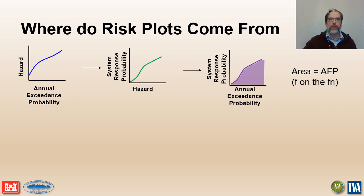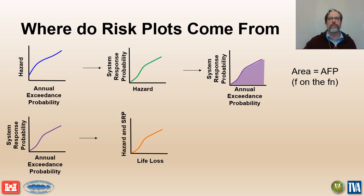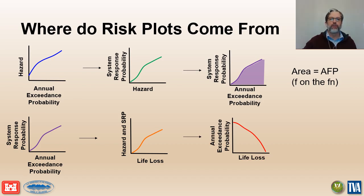In the next step, the combined hazard and system response curve can be combined with a consequence curve that defines the life loss as a function of the hazard and system response. The resulting curve defines the life loss as a function of the annual exceedance probability. The area under this combined curve equals the average annual life loss, which is the product of little f and little n on the fn plot. Remember that the area under an exceedance curve is equal to the expected or average value — this is the average annualized life loss.